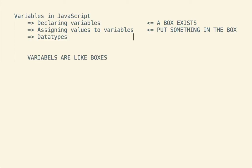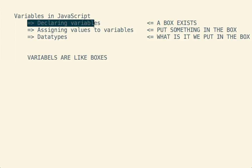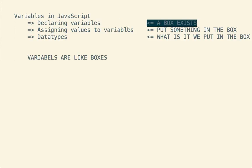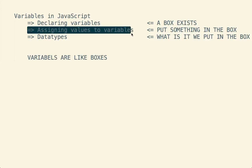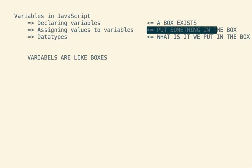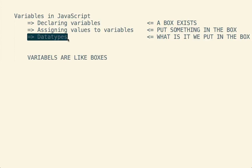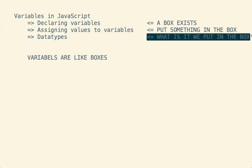When we talk about declaring variables, we're saying that we're declaring the existence of some kind of variable - we're saying that a box exists. When we're assigning a value to a variable, we put something in the box. And when we talk about data types, we talk about what it is we put in the box. So declaring a variable means we have some kind of a box; assigning a value means we want to put something inside of the box; and the data type describes what it is that we put inside the box.